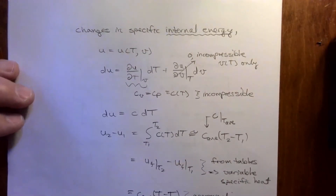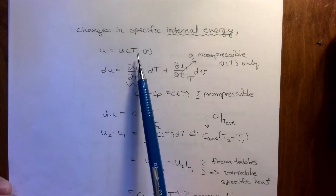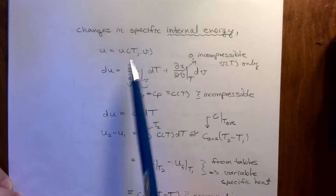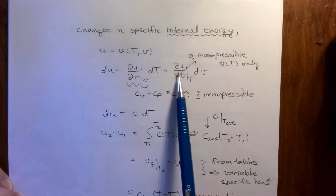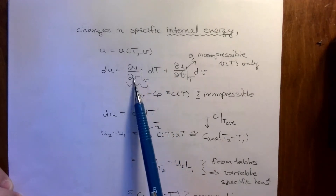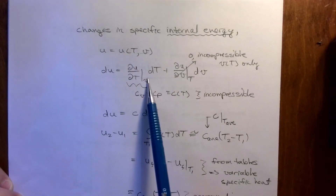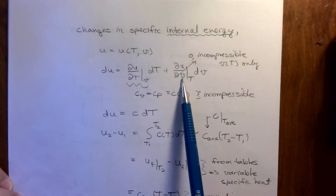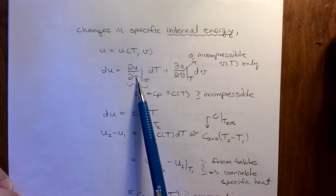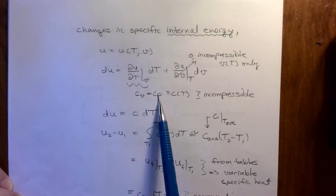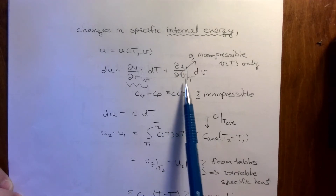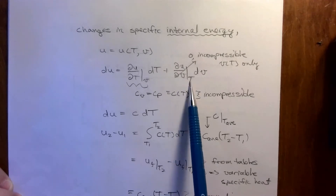For an incompressible substance, U is a function of T and V. Considering changes in internal energy, the full derivative is the partial with respect to T times dT plus the partial with respect to V times dV. The partial of U with respect to T while holding V constant is by definition C sub V, which equals C sub P, or just C, for incompressible substances. The partial of U with respect to specific volume while T is constant — but specific volume is a function of temperature which is not changing — so that term is zero.